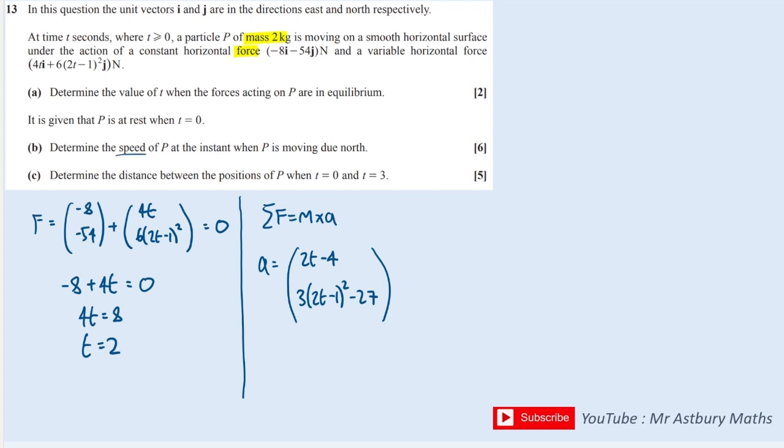That is the acceleration by taking the sum of the forces and dividing it by the mass, which is 2. Now I'm interested in the speed, so I'm going to have to work out the velocity. We have position, velocity, acceleration. We differentiate down, we integrate up. So we're going to need to integrate the acceleration with respect to t.